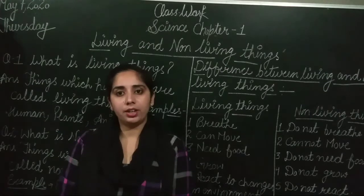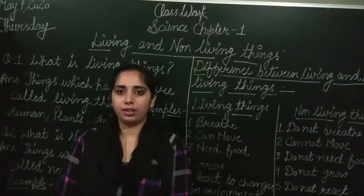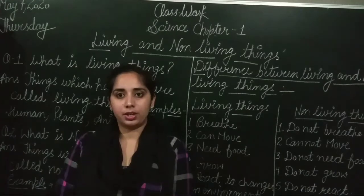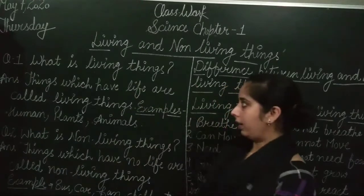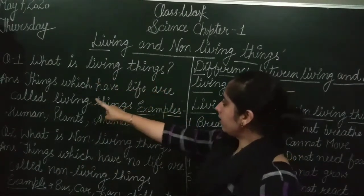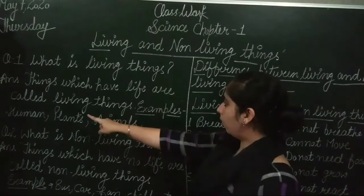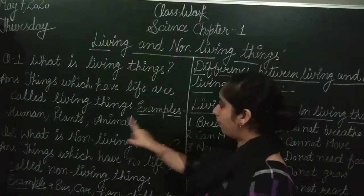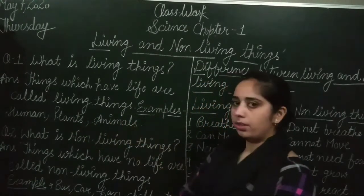First of all, living and non-living things. What are living things? Things which have life are called living things. For example: human, plants and animals.